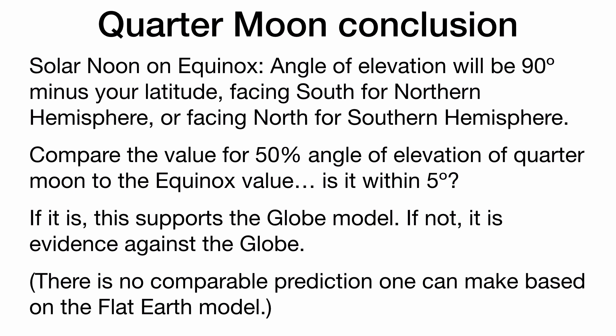If it is not within five degrees, that's evidence against the globe — because if the Earth is a globe, the geometry should match. There is no comparable prediction we can make based on the flat Earth model, because the moon kind of does its own thing and is not illuminated by the sun on the flat Earth.